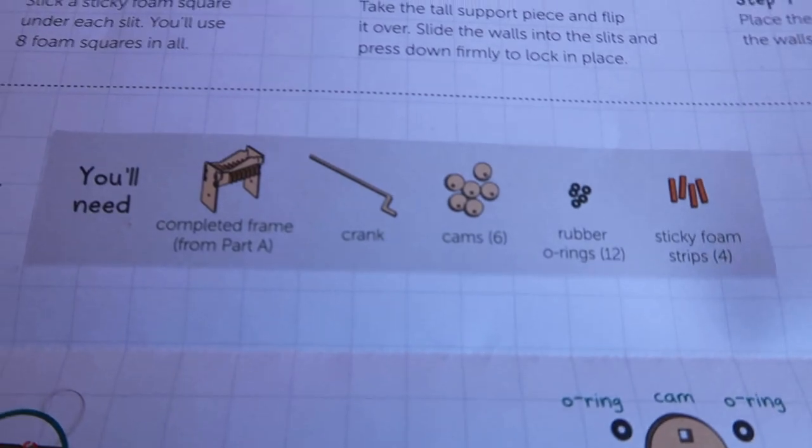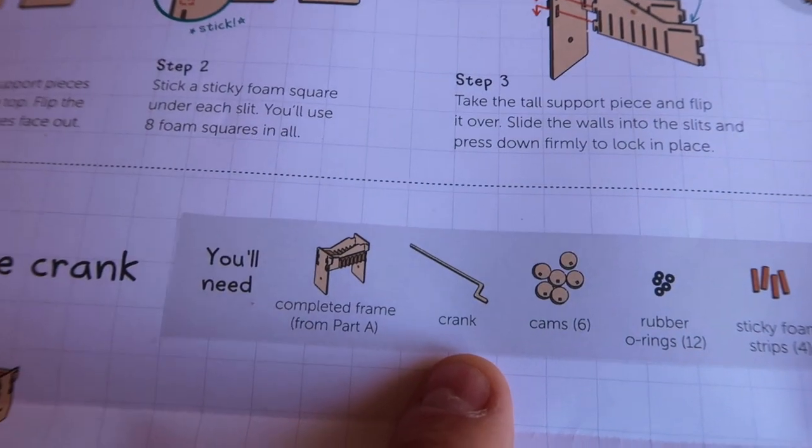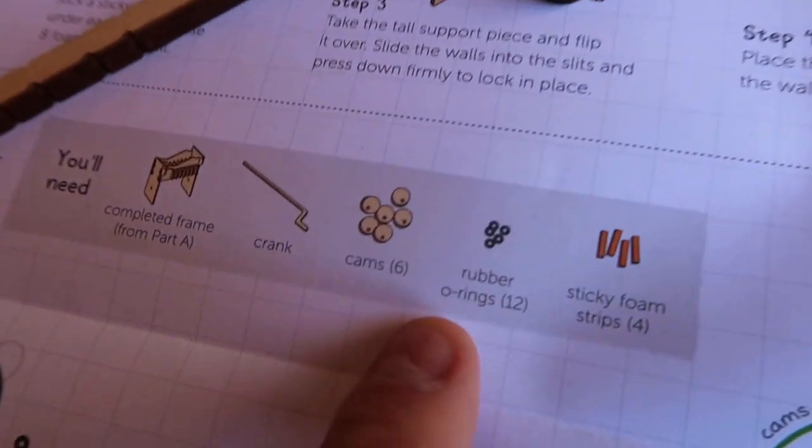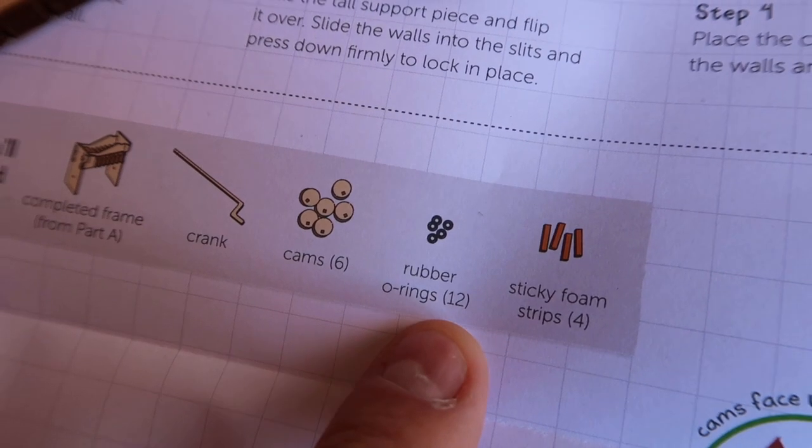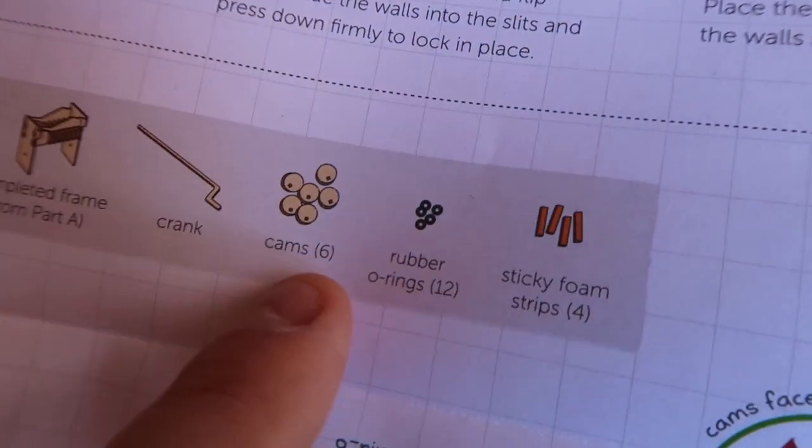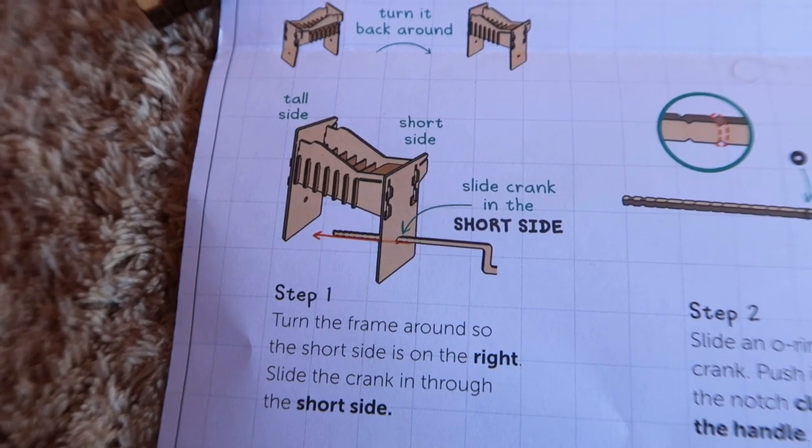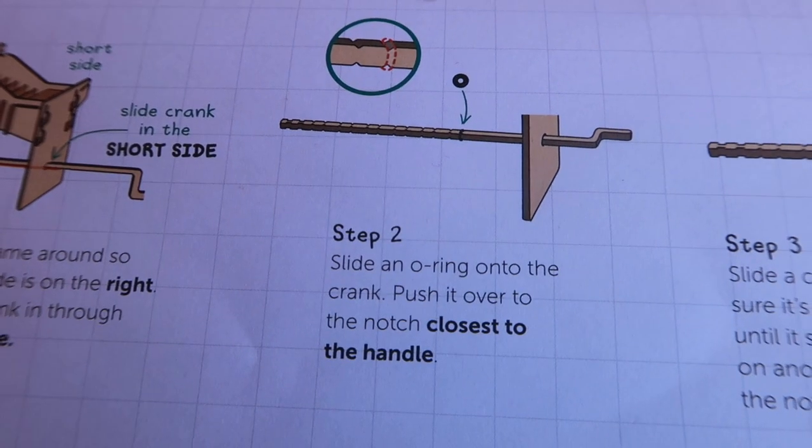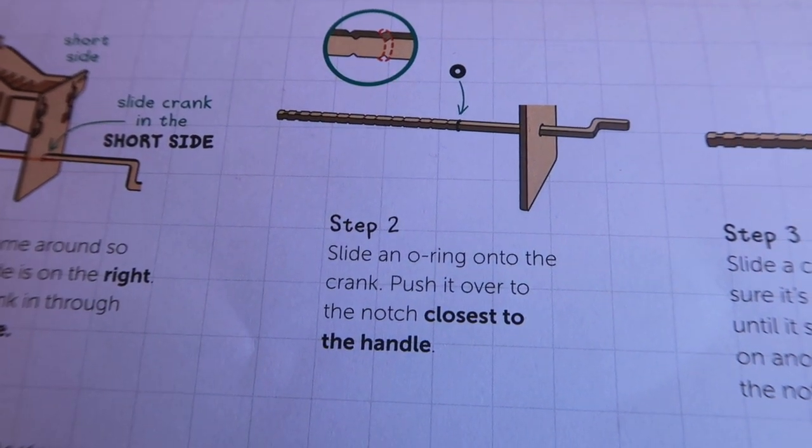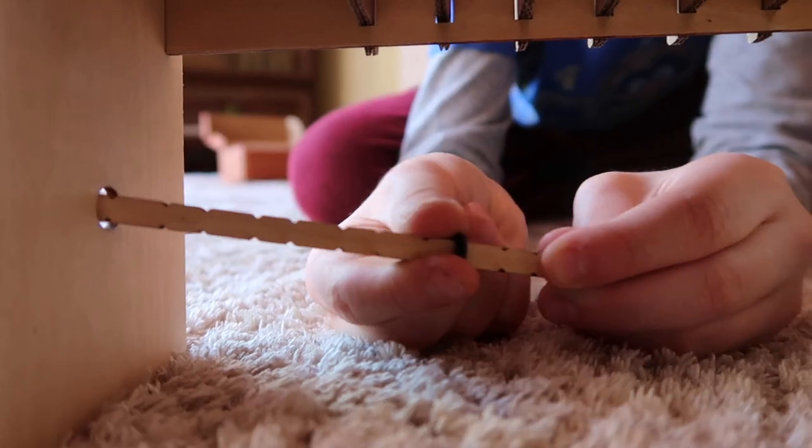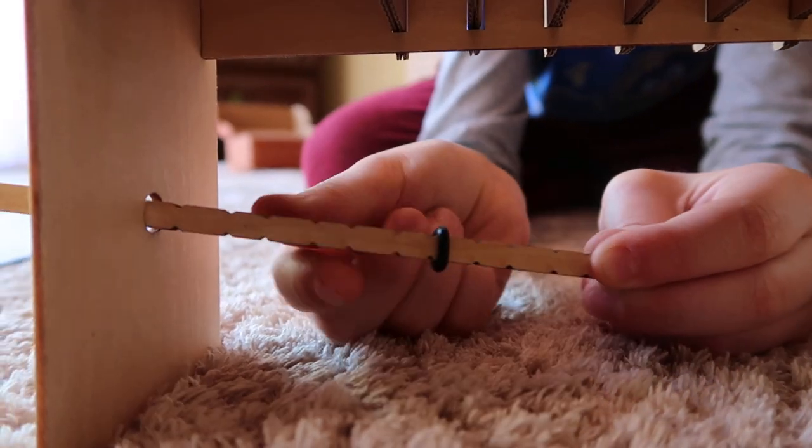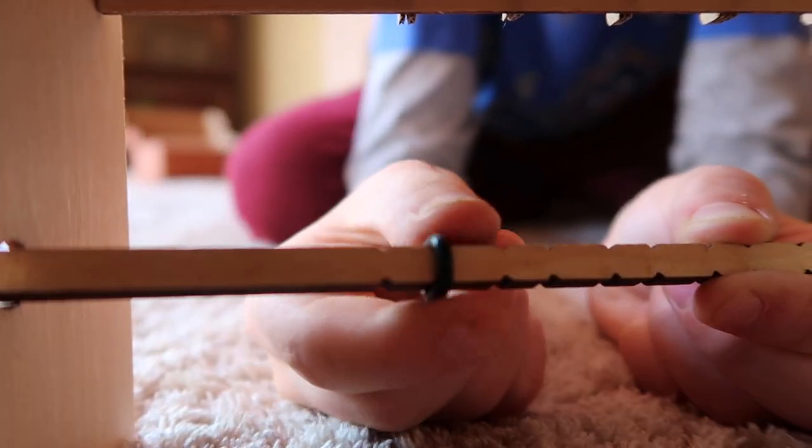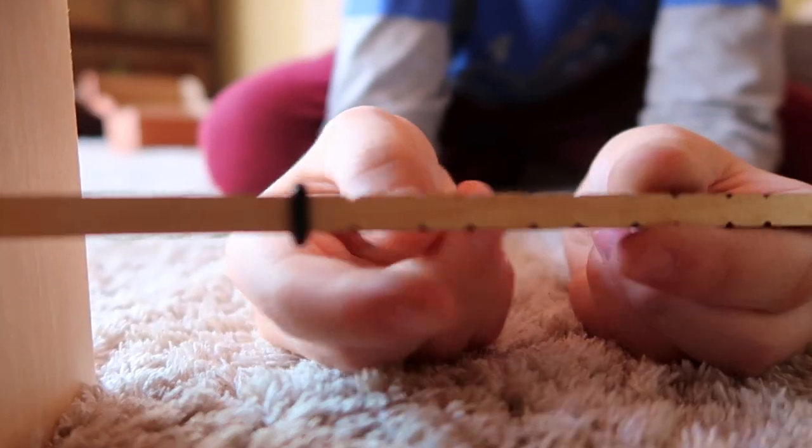Build the crank. What you're gonna need is the crank. We need six cams, 12 rubber o-rings and four sticky foam strips. Turn the frame around so the short side is on the right. Slide the crank in through the short side. Slide an o-ring onto the crank. Push it over to the notch closest to the handle. Slide it all the way to the far notch. Perfect right there.